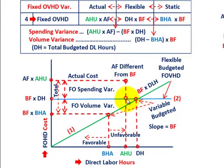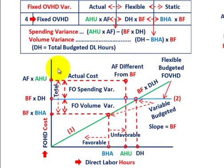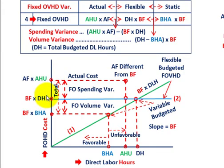We have three points to deal with. For our fixed overhead spending variance, that's really the difference between our actual amount — actual fixed rate times actual hours used — versus our budgeted fixed rate times the denominator hours, which is the flexible amount. So fixed overhead spending variance is between our actual results for the period and our flexible budgeted amount.